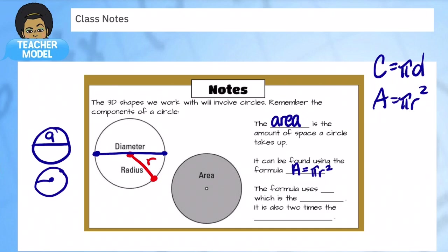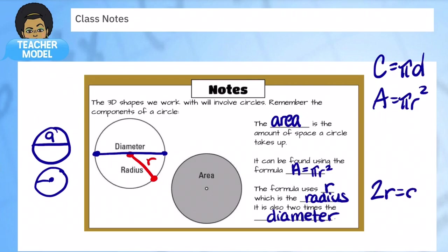The formula uses r, which is the radius. Two times the radius equals the diameter. So if they give you a diameter, just divide it by two to get the radius. Hit pause so you can jot this down in your notes.